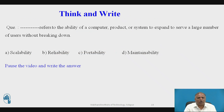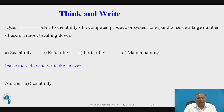Question for students: Blank refers to the ability of a computer product or system to expand to serve a large number of users without breaking down. Option A: Scalability. Option B: Reliability. Option C: Productivity. Option D: Maintainability. The correct answer is scalability. Scalability refers to the ability of a computer product or system to expand to serve a large number of users without breaking down.